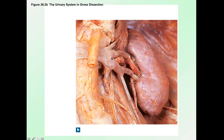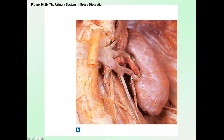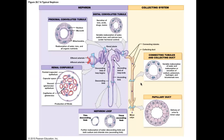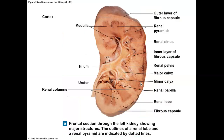The gross anatomy of the kidney is pretty simple — it's kidney-bean shaped. There's a dent called the hilum of the kidney. The hilum contains the renal artery, renal vein, and the ureter leaving the kidney. You're going to want to know this diagram.